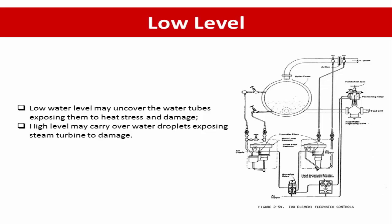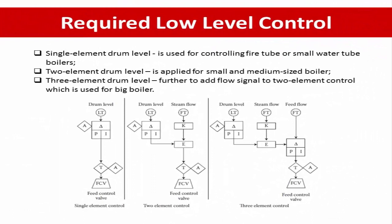In engineering practice, there are many control configurations to maintain the water level. Single element drum level control is a simple type used for controlling fire tube and small water tube boilers, based only on the boiler level without compensation. Two element drum level control is applied for small and medium size boilers, measuring steam flow along with boiler drum level using steam flow feed-forward control. Three element drum level control further adds a feed water flow signal, and is most widely used for large boiler capacity.